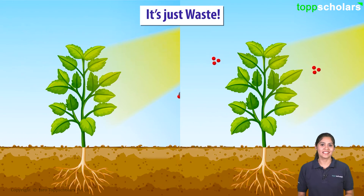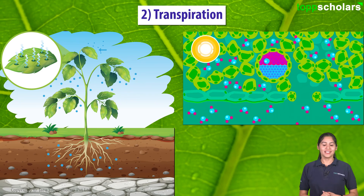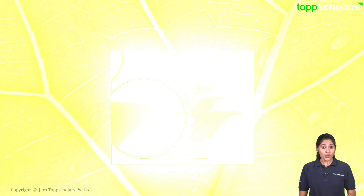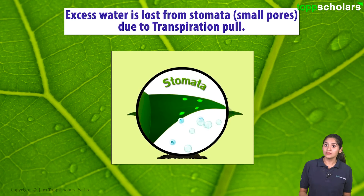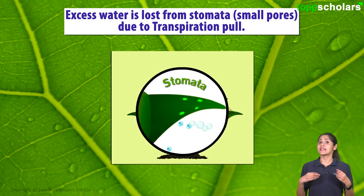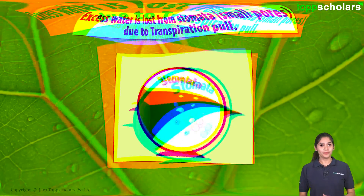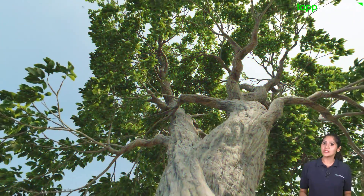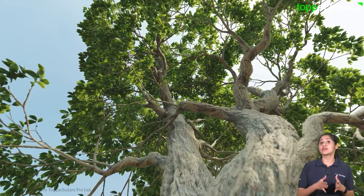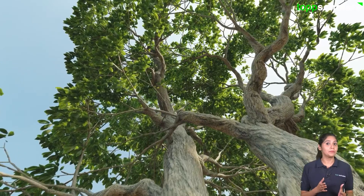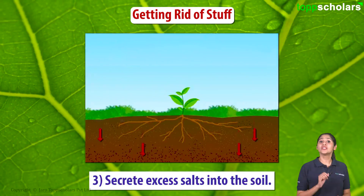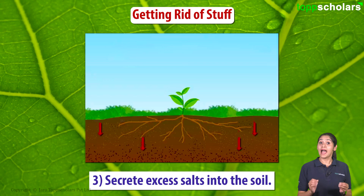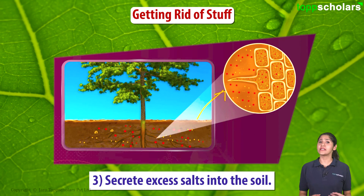The next strategy is transpiration — excess water is lost from stomata, which are small pores, by the process of transpiration. It is also the mechanism that makes water available to the tips of plant parts of such tall trees.